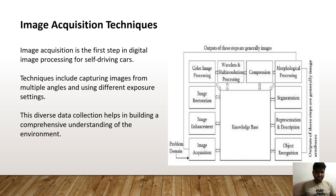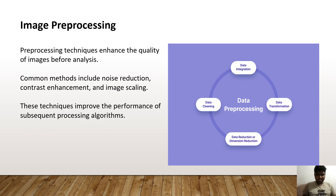Let's move on to image acquisition techniques. Image acquisition is the first step in digital image processing for self-driving cars. Techniques include capturing images from multiple angles and using different exposure settings. This diverse data collection helps in building a comprehensive understanding of the environment. This is the main block diagram of the image acquisition sensors.